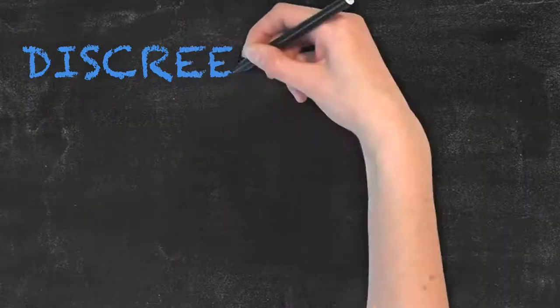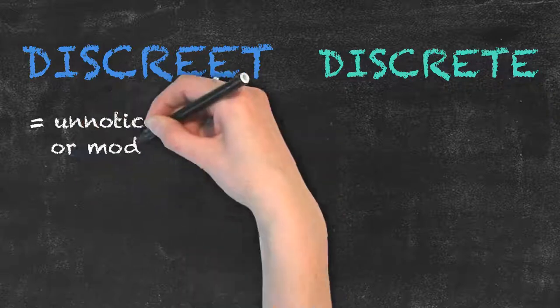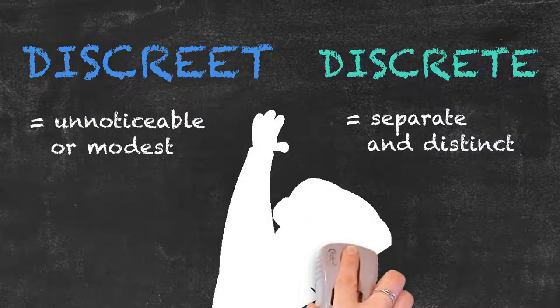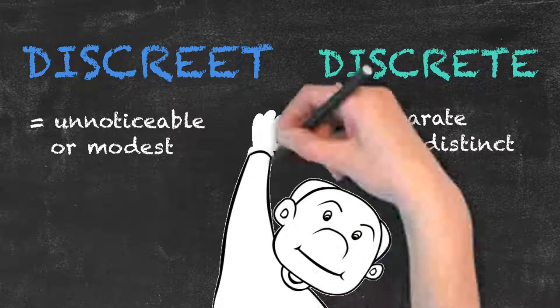So remember, discreet means unnoticeable or modest and discrete describes something separate and distinct. That's it for today. See you next time.